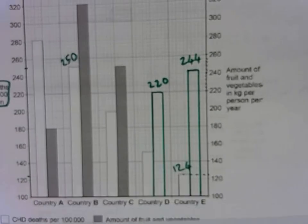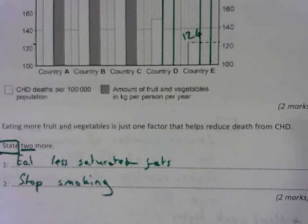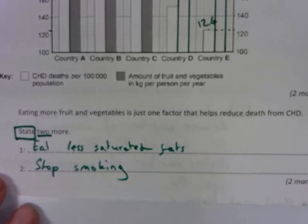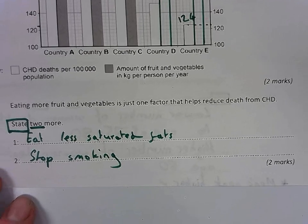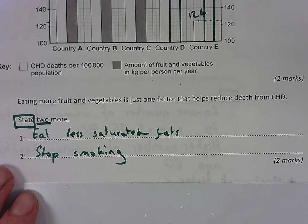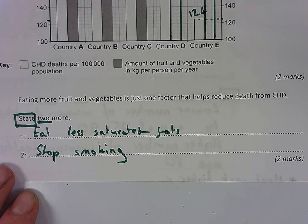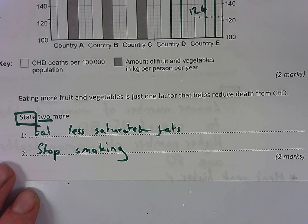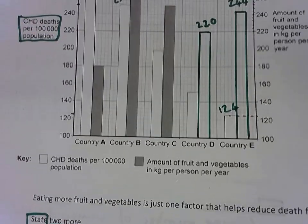That should be your final answer. Another factor that reduces death from CHD would be less saturated fats and to stop smoking. You can also say a less fatty diet, a lower cholesterol diet, to exercise more, or lose weight — any way of reducing your weight, because obesity is also a risk factor.